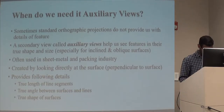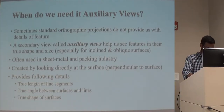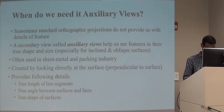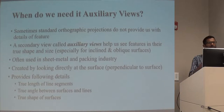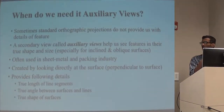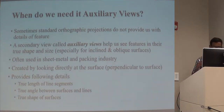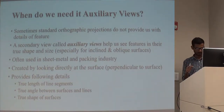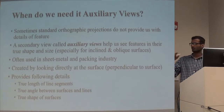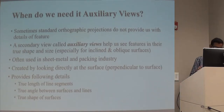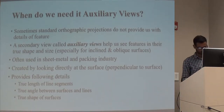Auxiliary views are often used in sheet metal and packaging industries. They are created by looking directly onto the surface. If I am looking directly onto that inclined surface, whatever I would be seeing needs to be drawn from that particular angle. It provides the true length of line segments, true angle between surfaces and lines, and true shape of surfaces.